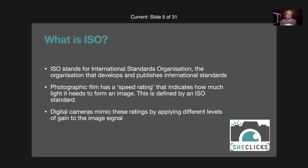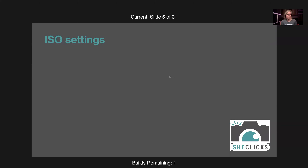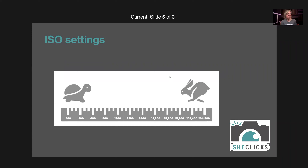Digital cameras mimic these ratings by applying gain. A sensor has a fixed sensitivity — you can't actually change that — so you need to apply gain, or amplify the signal from the sensor, to make it a visible image or to make it work in lower light. It's a bit like playing music and turning the volume up so you can hear it from further away — you're applying gain to a signal coming from the sensor.